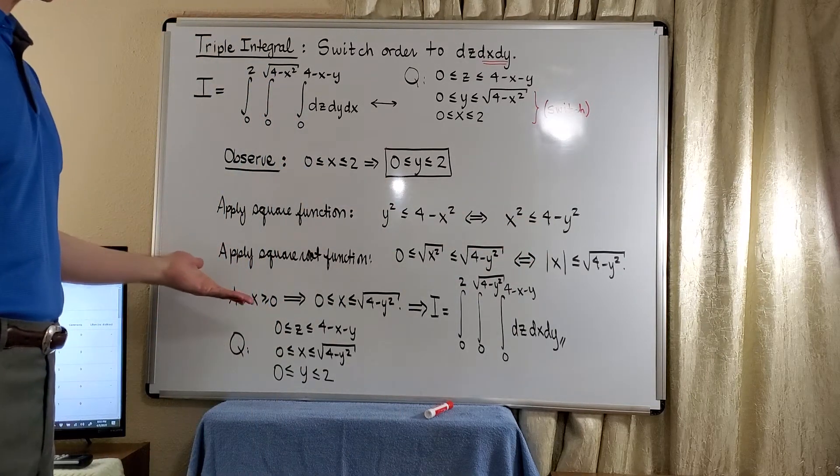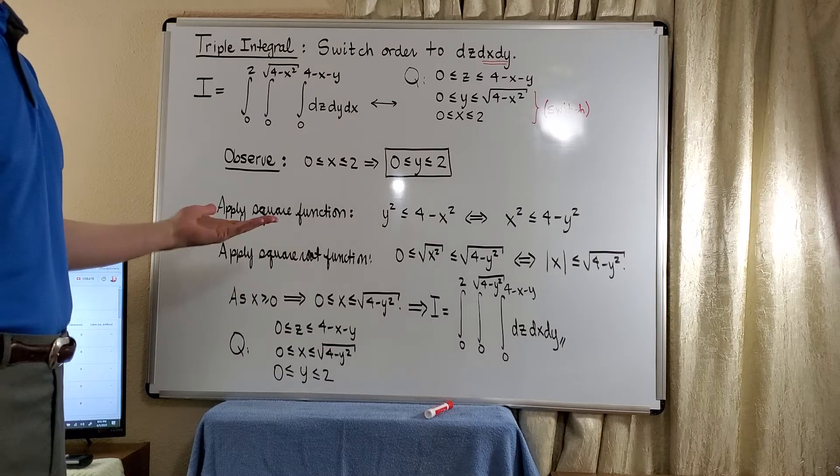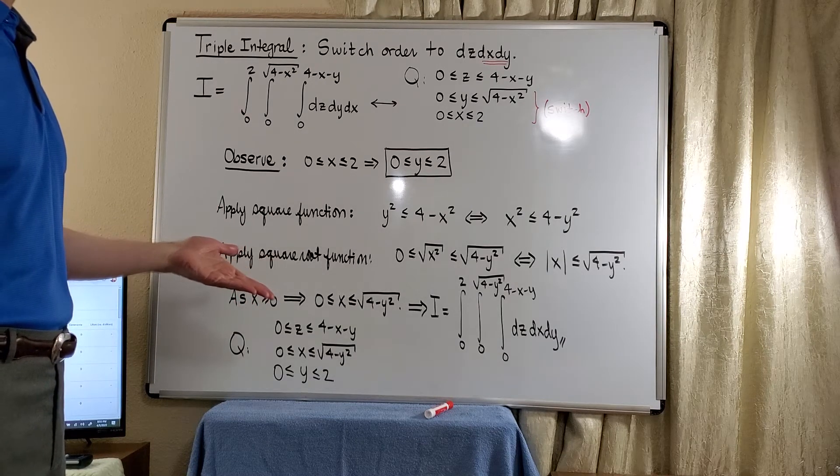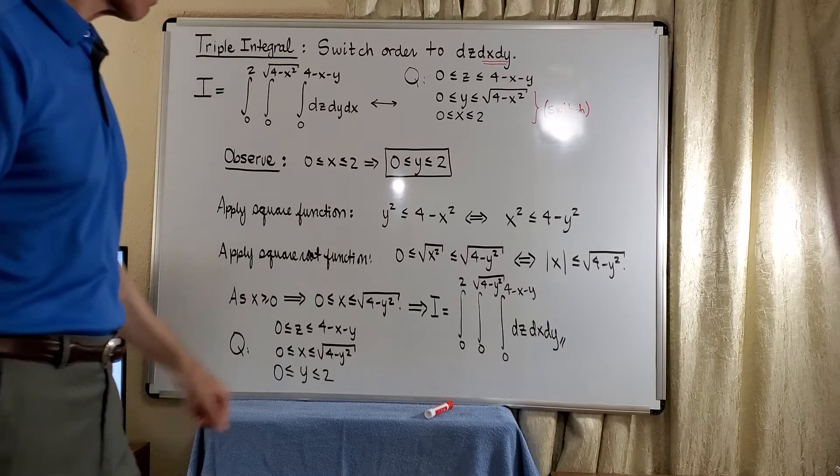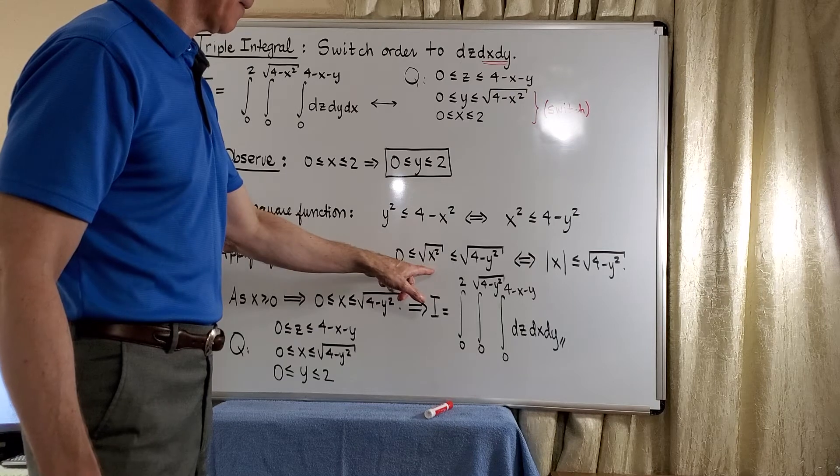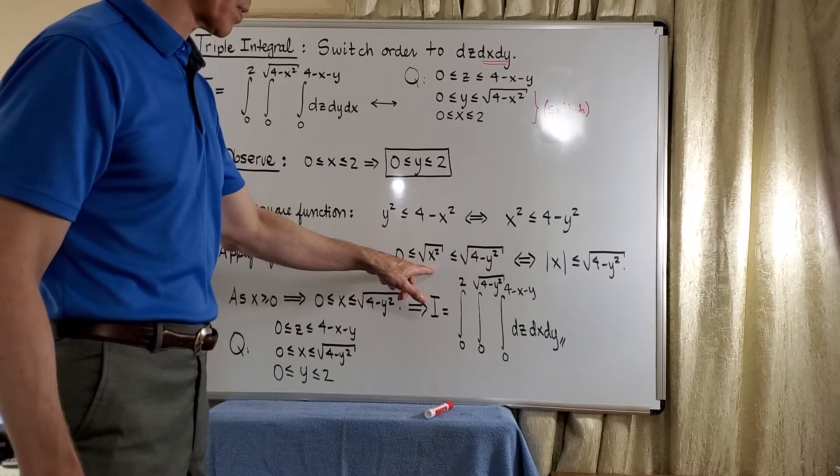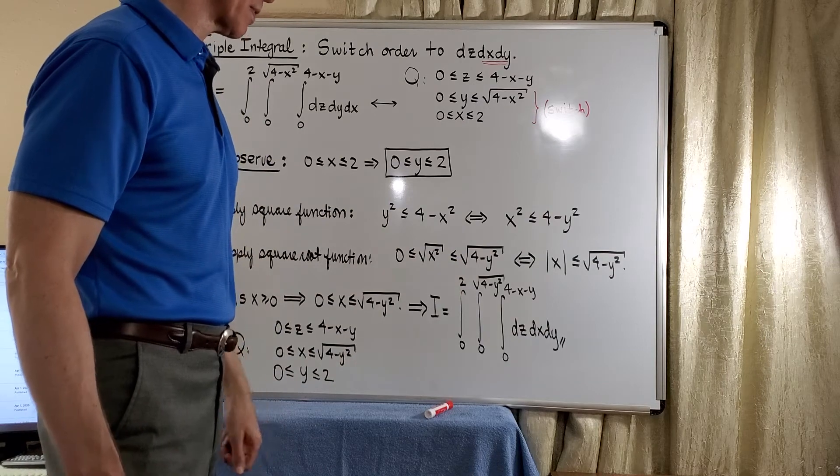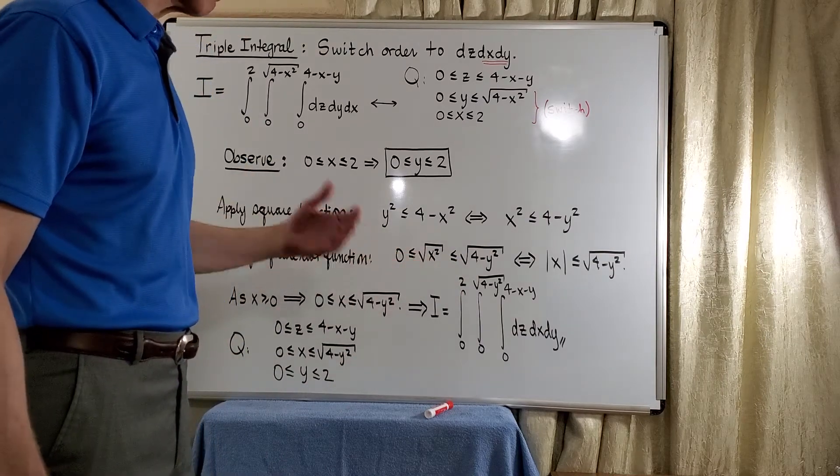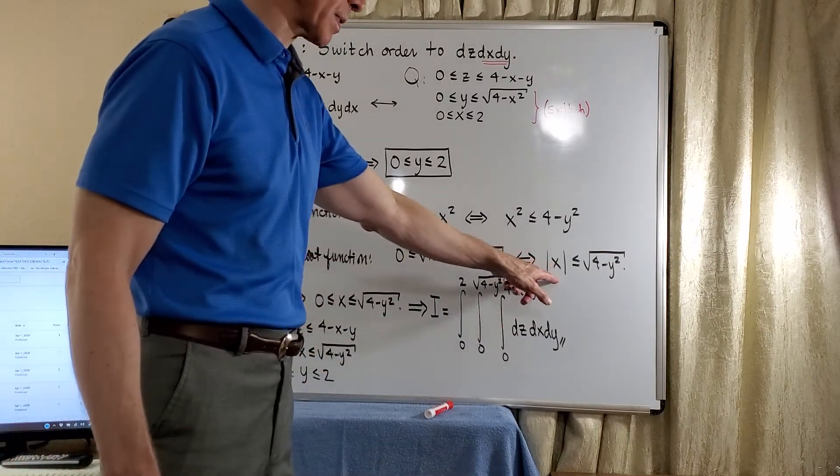Now, we apply the square root function since we need to solve for x. And again, the square root function on this particular interval is increasing, so it preserves the inequality. So we get 0 is less than or equal to the principal square root of x squared, less than or equal to the square root of 4 minus y squared. But of course, by definition, the square root of x squared is the absolute value of x.